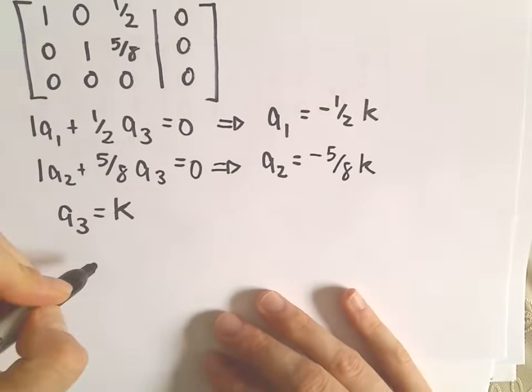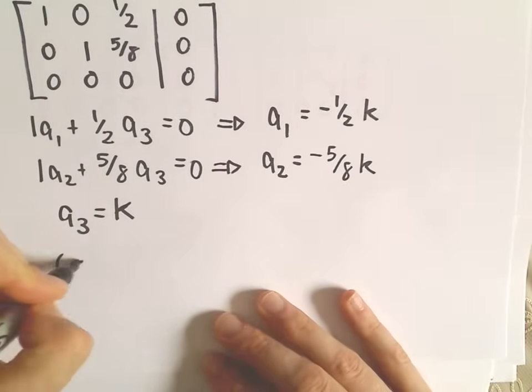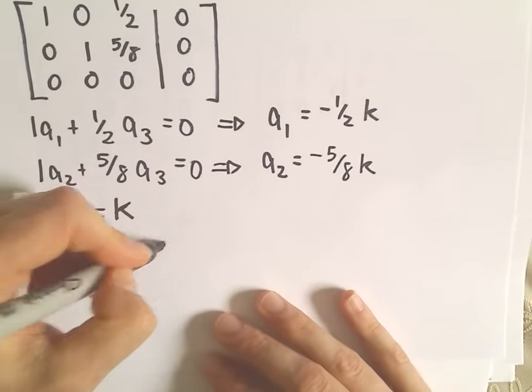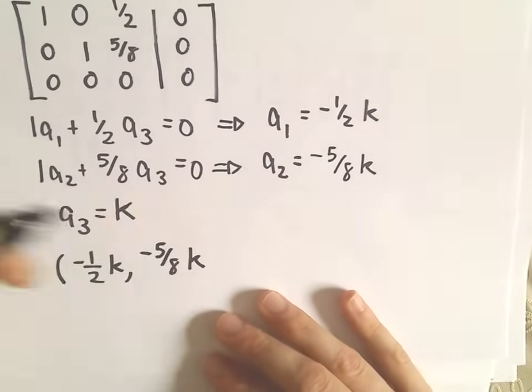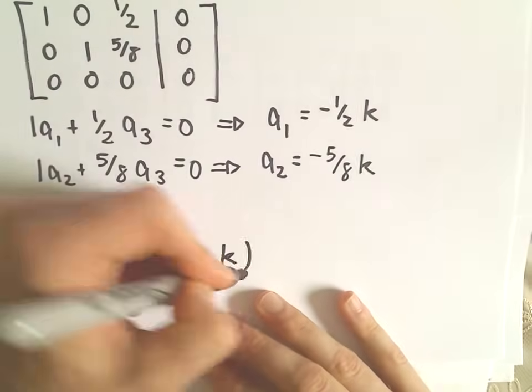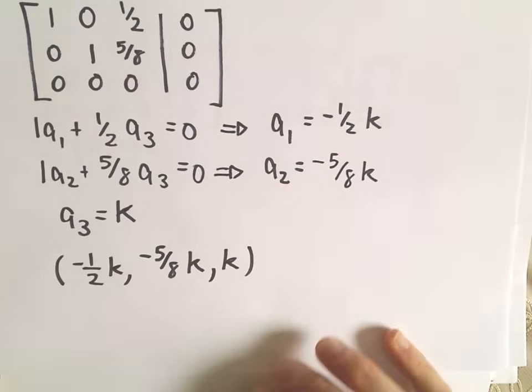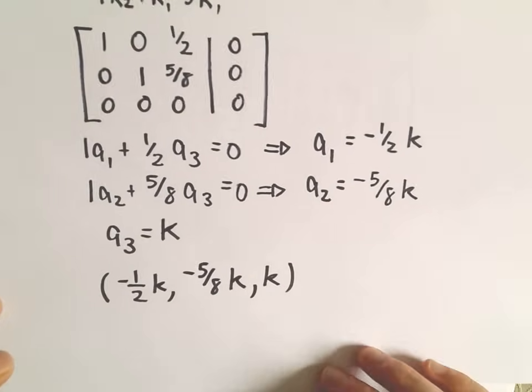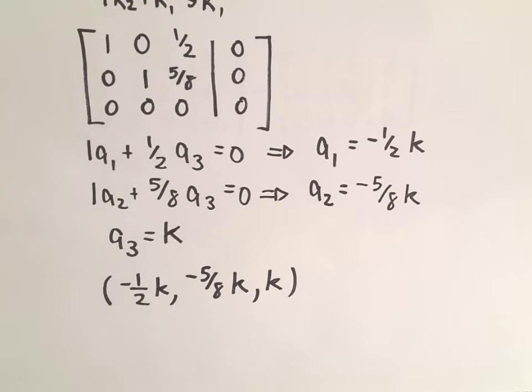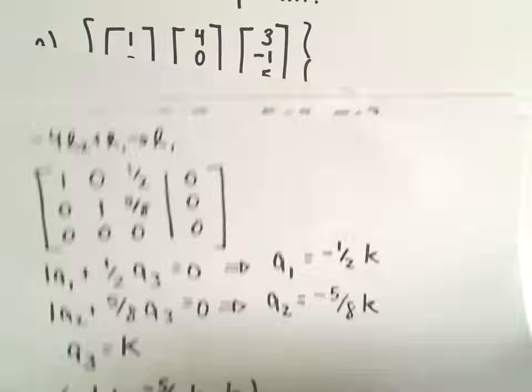So it says, basically, we have non-trivial solutions of the form negative 1 half times k, negative 5 8ths times k. And then pick your favorite value for k. And we'll get lots of different solutions to this original, that original equation that we started with.